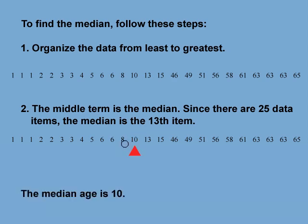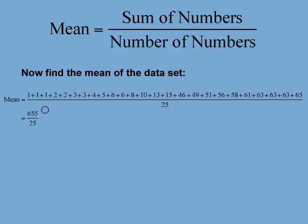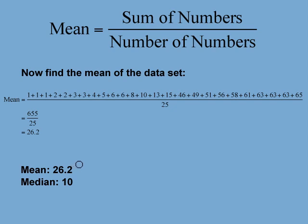Now let's compare it to the mean age. The sum of the ages is 655 divided by 25; the mean age is 26.2. Here you see that the mean and the median are not close at all. Part of the reason is that there are a lot of extremes in the data — a lot of very young people and a lot of older people. Which statistic would you use as the measure of central tendency for this group — the mean or the median? The median.